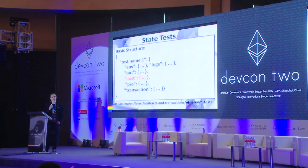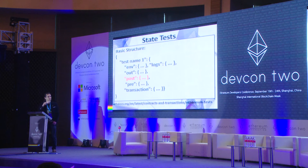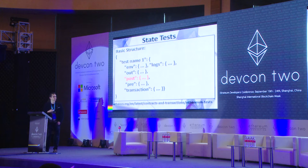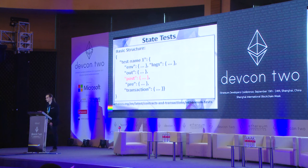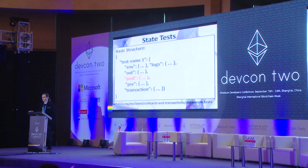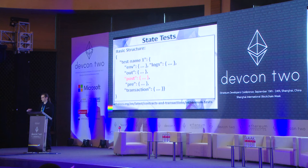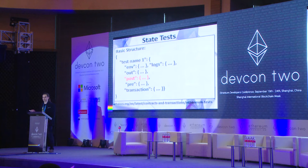I'll begin with the more simple tests — state tests. They are encoded in JSON files. You can see the link below to the documentation. In such JSON tests, the most important part is the post state that would be created by the client while creating an environment with some pre-state and a transaction that would be executed in this pre-state. The client should create such an environment, execute the transaction, get their own post state, and then compare this post state to the one described in the test file.